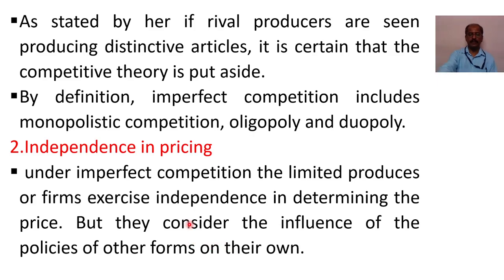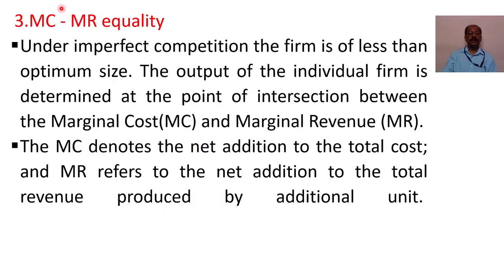The output of the individual firm is determined at the point of intersection between MC (Marginal Cost) and MR (Marginal Revenue). The MC denotes the net addition to the total cost, while MR refers to the net addition to the total revenue produced by an additional unit.